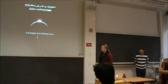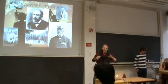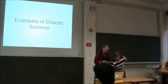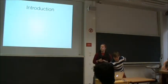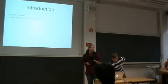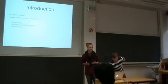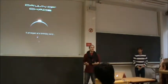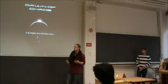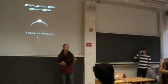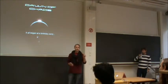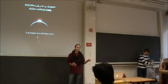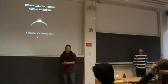It all begins at a birthday party. The king has his 60th birthday, and to celebrate, he announces a competition — the competition to solve the three-body problem. Why? Because it would be good to know if the solar system is stable, and it would also have implications for navigation at sea. Eight months later, a winner is selected.